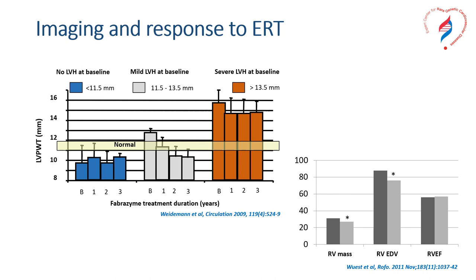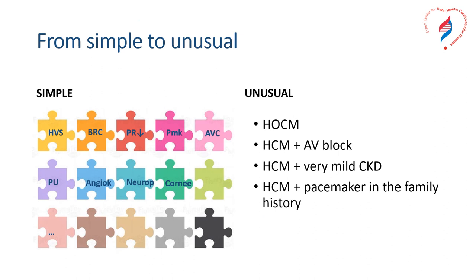Regression of hypertrophy and positive remodeling are also noted for right ventricular hypertrophy. To remember: from simple to unusual, Fabry cardiomyopathy can be diagnosed if LV hypertrophy is associated with chronic kidney disease, short PR interval, need for pacemaker, stroke, proteinuria, angiokeratoma, neuropathy, or cornea verticillata. Unusual forms that should prompt testing if red flags occur include hypertrophic obstructive cardiomyopathy, HCM associated with AV block or pacemakers in family history, or very mild chronic kidney disease with hypertrophic cardiomyopathy.